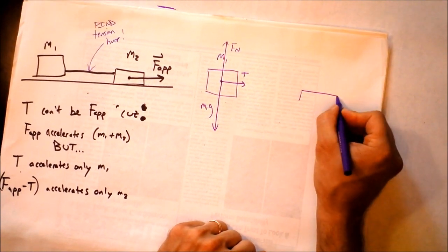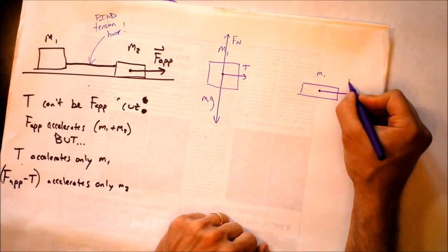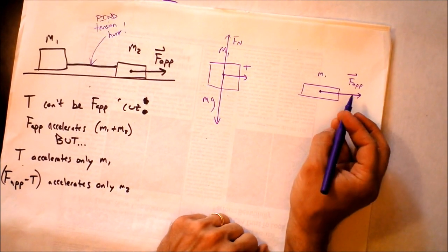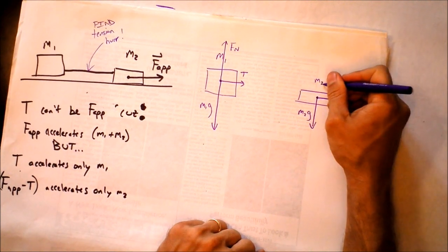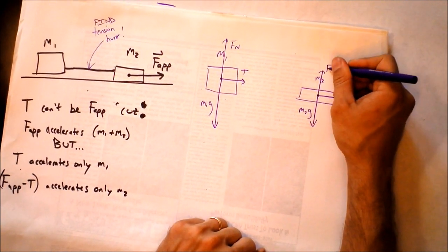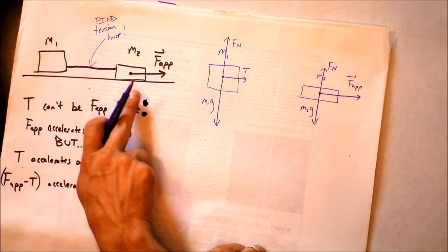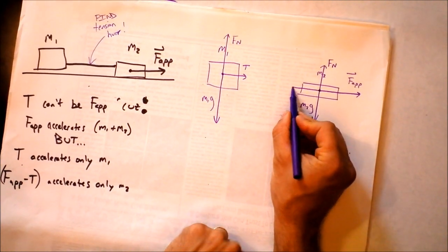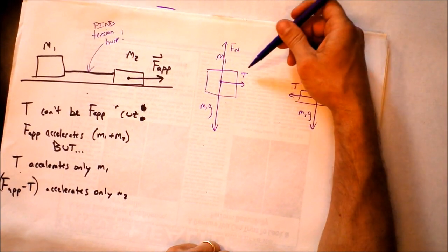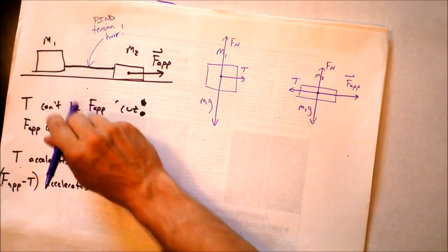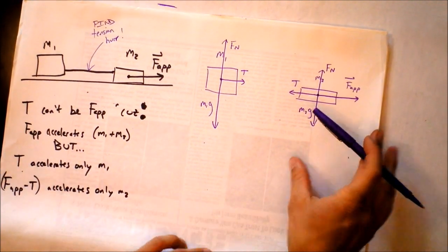For M2, we'll draw it separately so we don't get confused. We've got the applied force to the right, the weight M2 times g, and the normal force on box two. Are there any other forces on M2? Yes — we need to put the tension on there. It's important to note that this tension is the same as that tension, because in a rope the tension is always the same, assuming the rope is massless. This is a horizontal rope, so we don't have to worry about gravity acting on it at all.